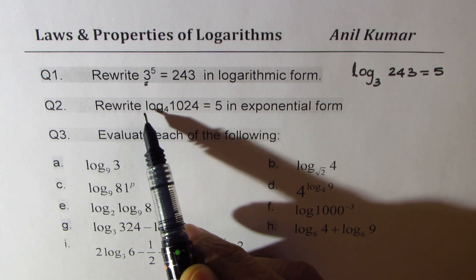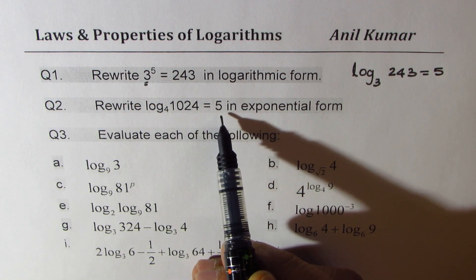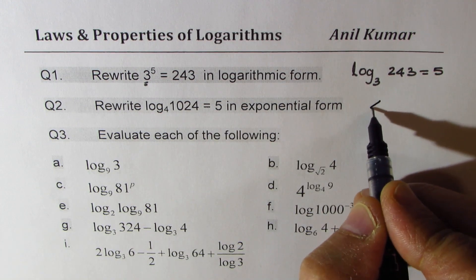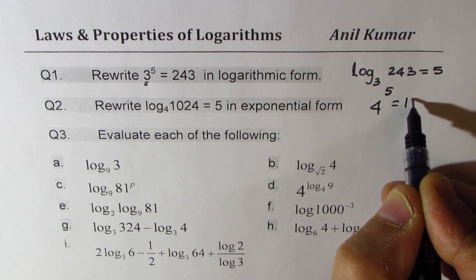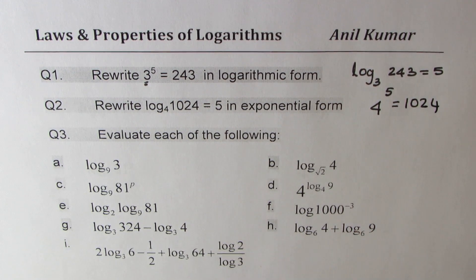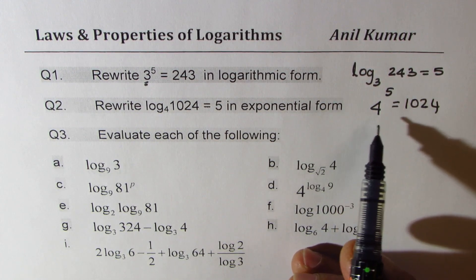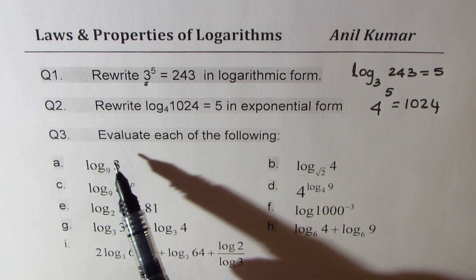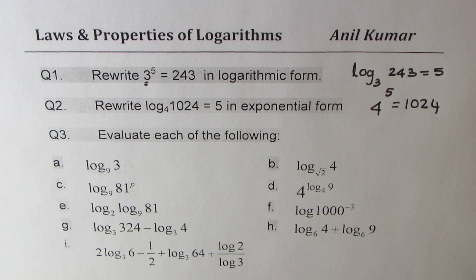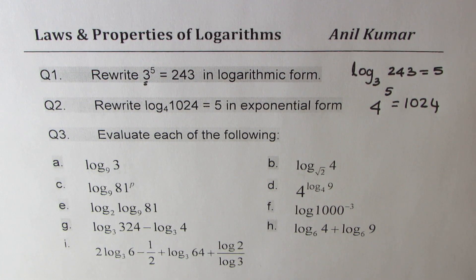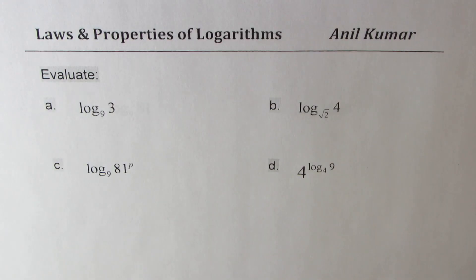Question two: we have log to the base 4 of 1024 equals 5, and we need to rewrite it in exponential form. Base is 4, so we write 4 to the power of 5 equals 1024. If you keep the base the same, your answer is correct. Now let's evaluate the remaining questions. You can pause the video, answer all the questions, and then look into my suggestions. The last one is a bonus question.